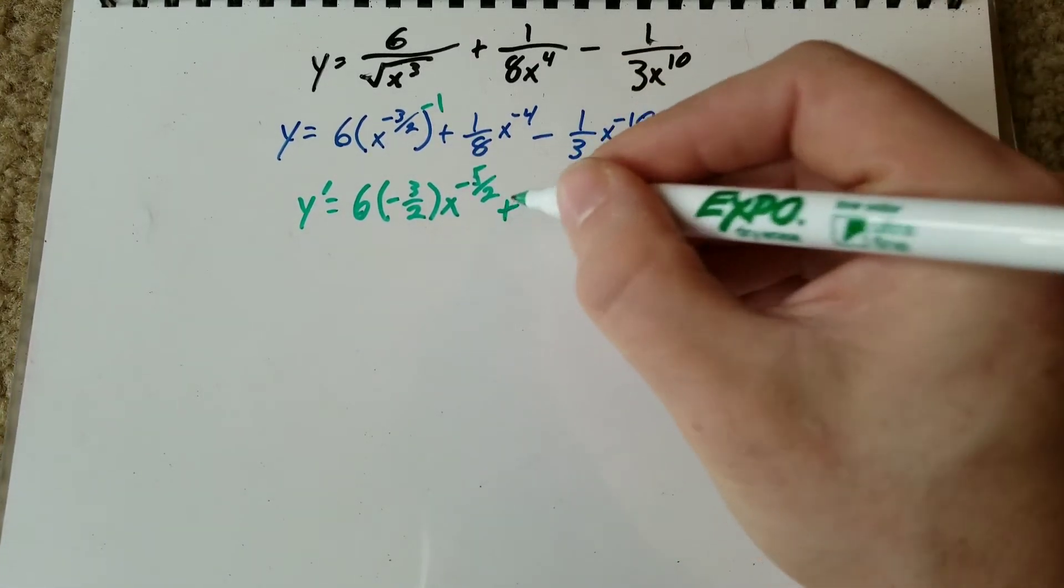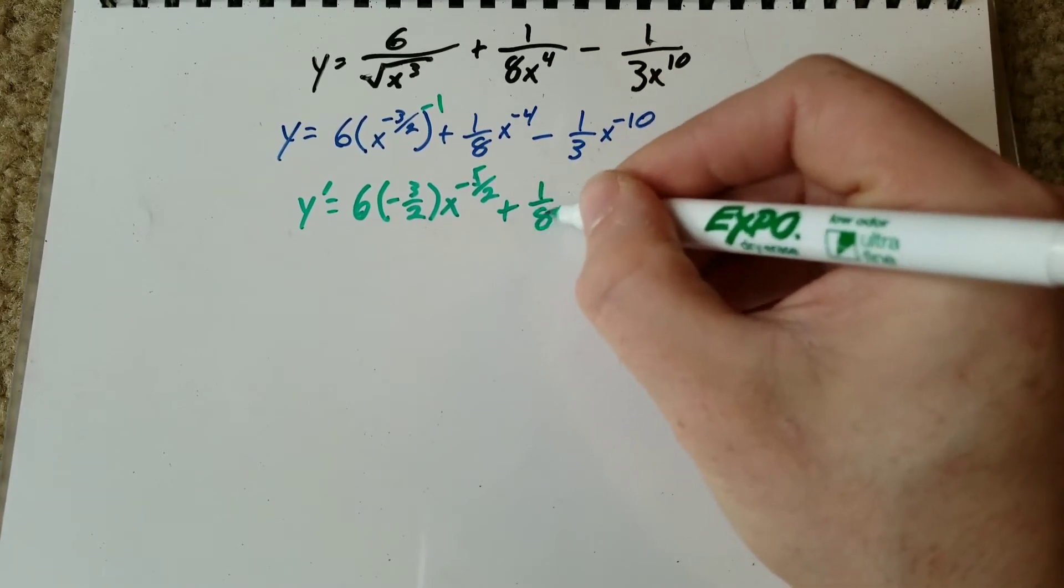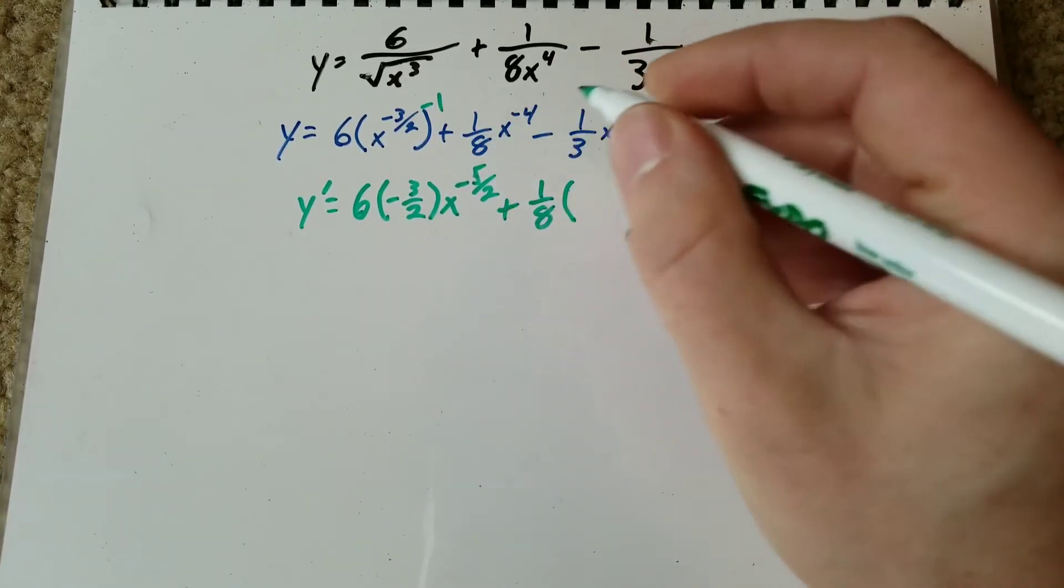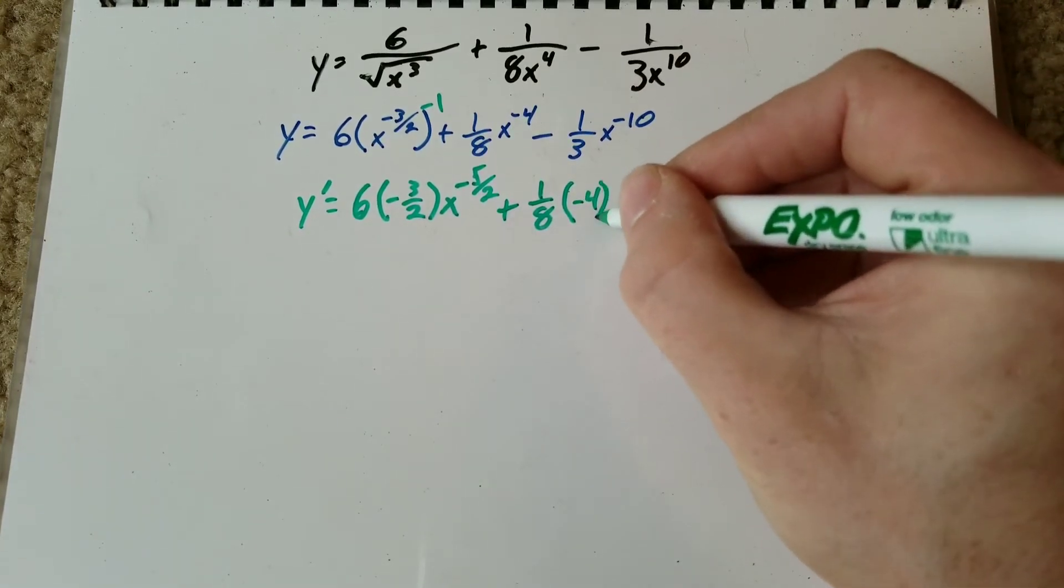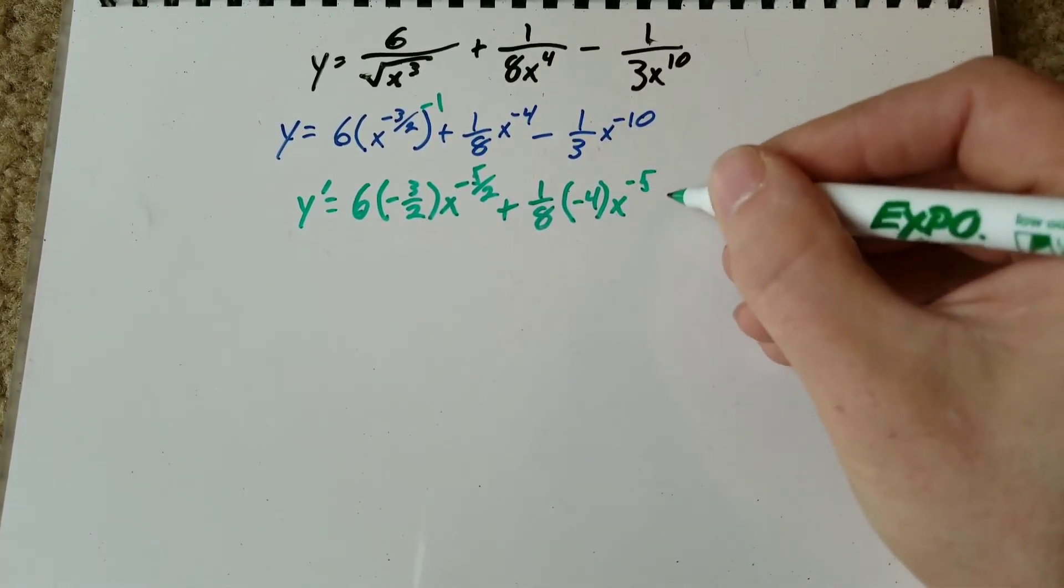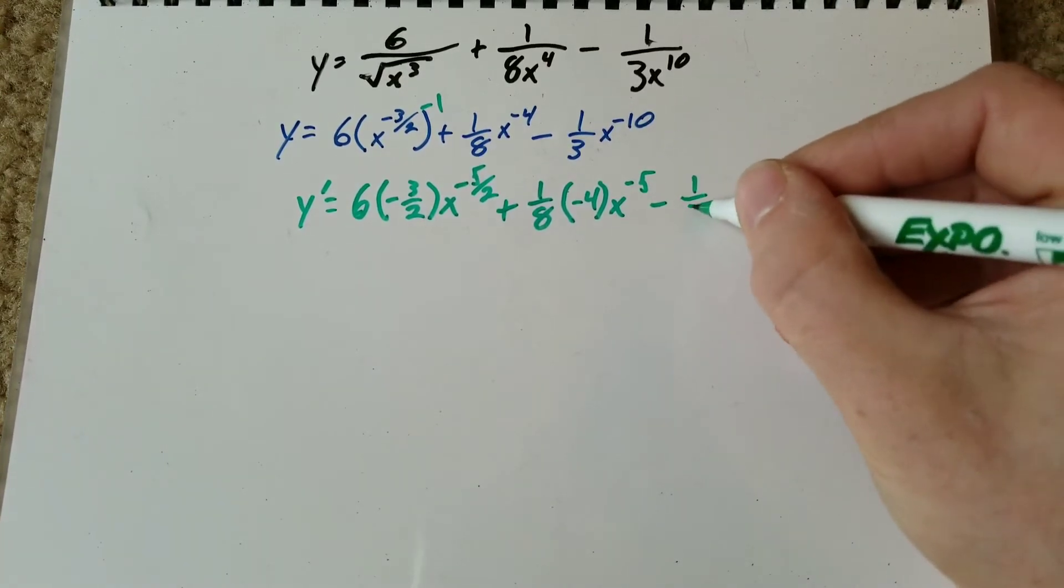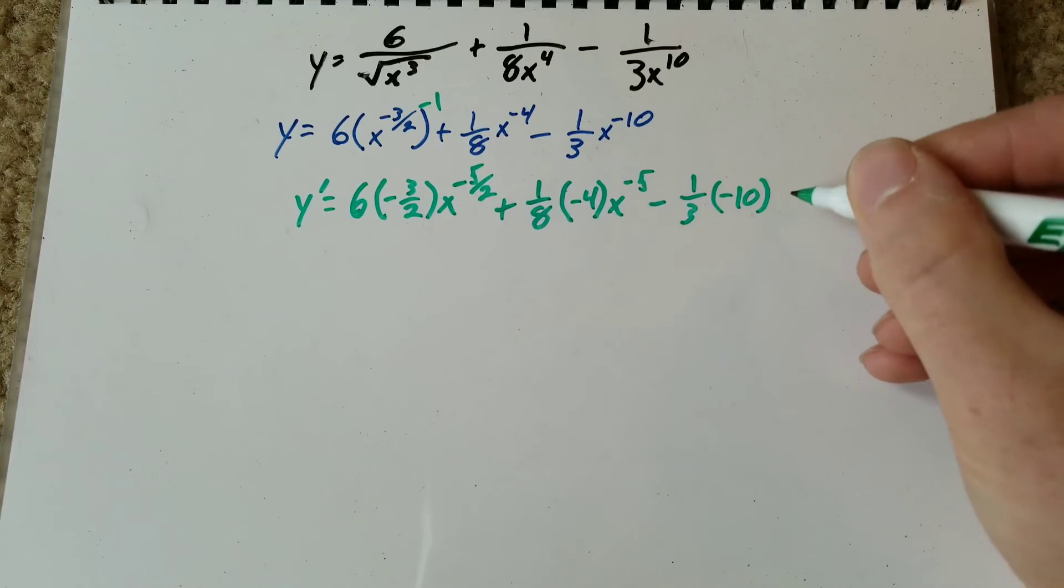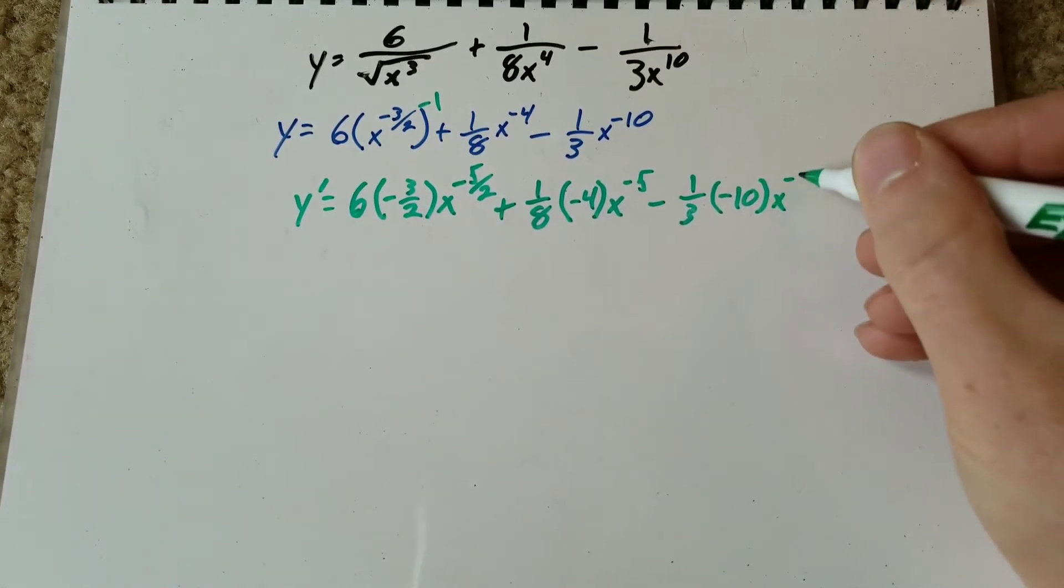And then we're going to do plus one over eight, and we're going to do the power rule here. So that's a negative four x to the negative five minus one third. Again, the power rule, giving us a negative 10 out front times x to the negative 11.